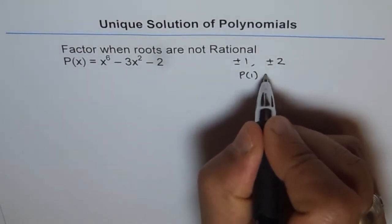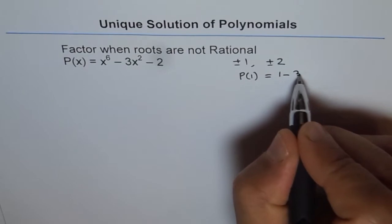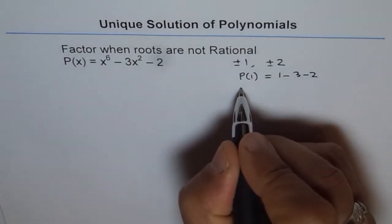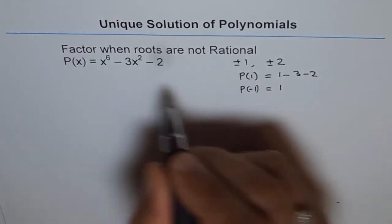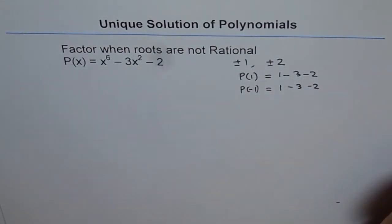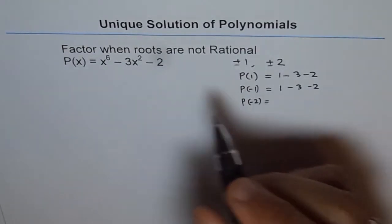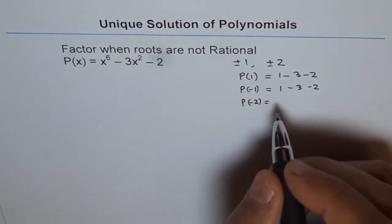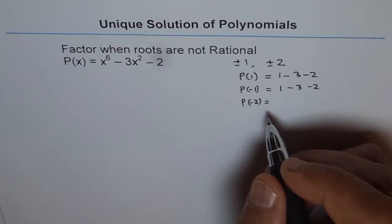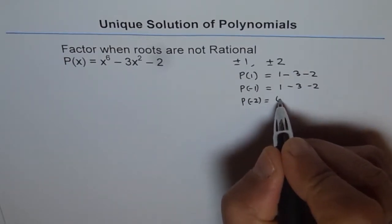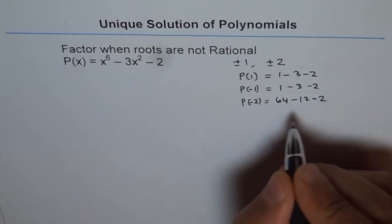If we check p(1), we get 1 minus 3 minus 2, which is not equal to 0. Similarly, p(-1) gives minus 1 to the power of 6 which is 1, minus 3 minus 2 — still not 0. Testing p(-2): minus 2 to the power of 6 is 64, and minus 3 times 4 is minus 12, minus 2. So we get 64 minus 12 minus 2, which is also not 0.